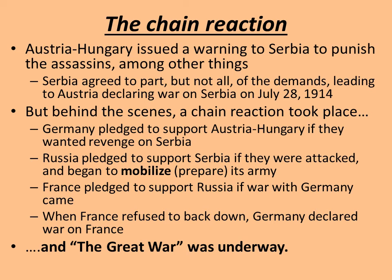This triggered the alliance system. Germany had already pledged to support Austria-Hungary, and Kaiser Wilhelm II essentially told Austria-Hungary to go ahead — they'd be behind them. What many didn't realize is that Russia had already pledged to support Serbia if attacked. So when Austria-Hungary declared war on Serbia, Russia mobilized its military and essentially declared war on Austria-Hungary. France had pledged to support Russia, so France got involved. Then Germany declared war on France. It was like one domino after another being knocked over, leading to the start of the war.